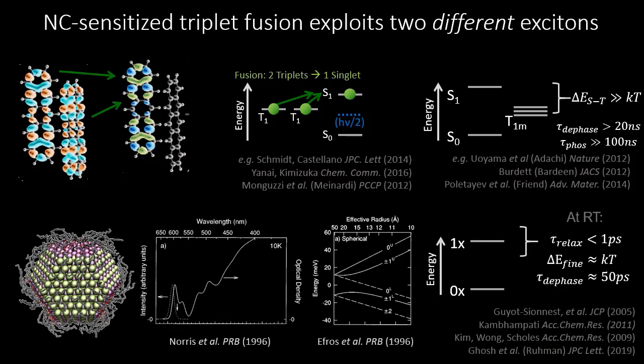Colloidal quantum dots have very different excited energy landscapes than conjugated organics. Because spin dephasing is rapid, spin is not a good quantum number, and the fine structure is well within kT at room temperature for most of these materials. We can treat them as effectively a two-level system: you excite to the bandgap or above, and very rapidly you have a functionally spin-mixed state. We can use these materials to sensitize because, for example, we can make infrared quantum dots much more easily than infrared-active organic chromophores, or use the modifiable surface of colloidal quantum dots to assemble all-in-one chromophores for self-contained upconverting dyes.